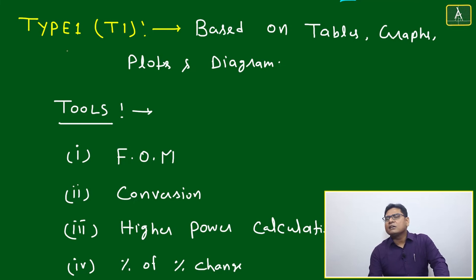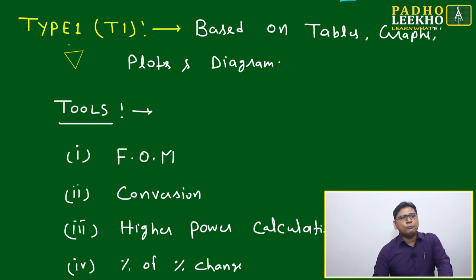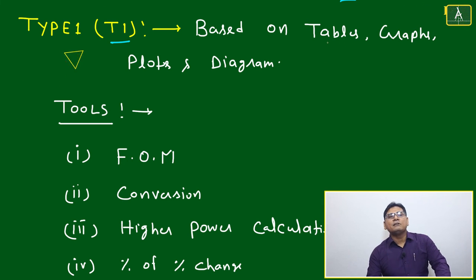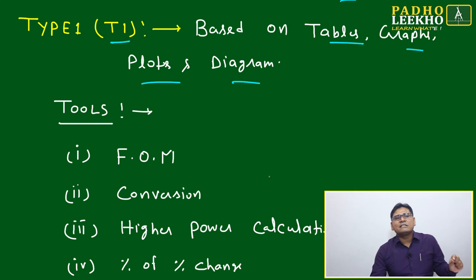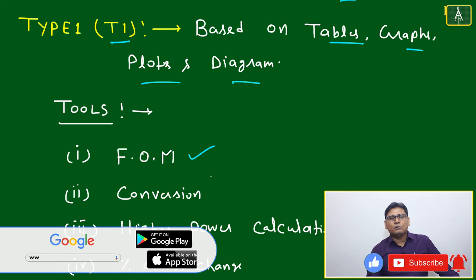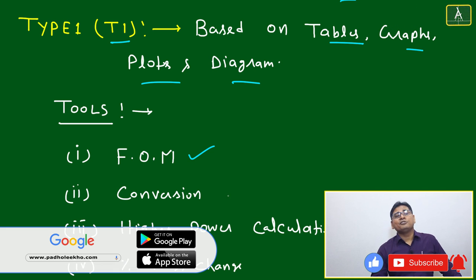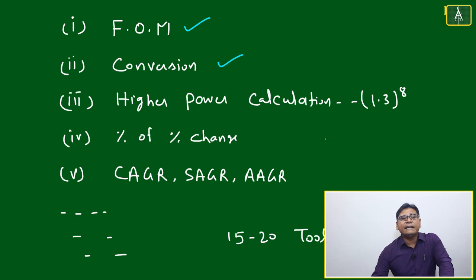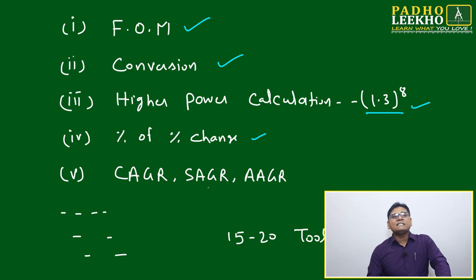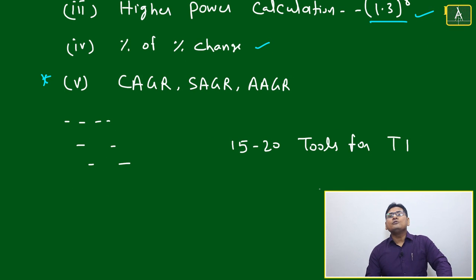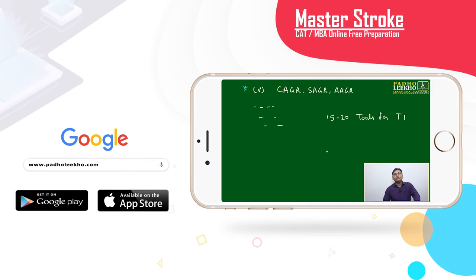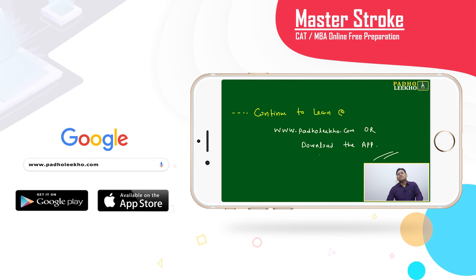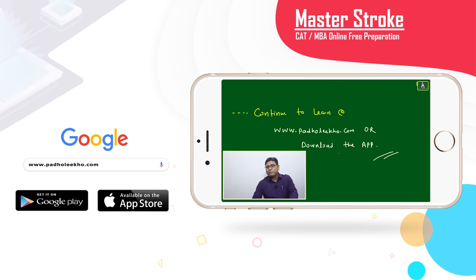For T1 DI case slates — tables, graphs, plots, and diagrams — the tools include: factor multiplication as the most important first tool, conversion of numbers using the RD technique, higher power calculation, percentage and percentage change calculations, and how to calculate CAGR, SGR, and AAGR. That accounts for 15 to 20 tools for Type 1. To learn all these tools and how to apply them, continue learning at paroleco.com — you can also download the mobile app. Thank you.